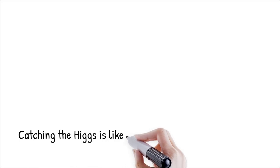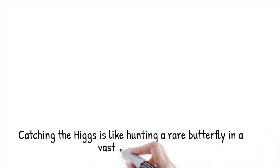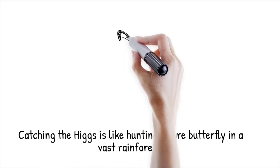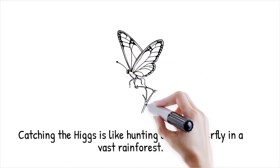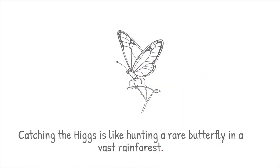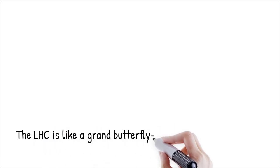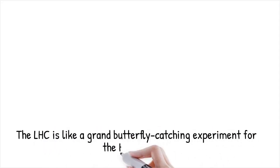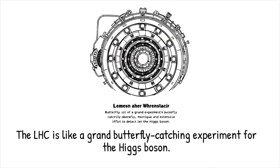The probability of producing a Higgs boson in a single proton-proton collision at the LHC is incredibly small — like playing a slot machine millions of times just to hit a particular combination once. By running the collider for months and years, scientists accumulate enough collisions to see the Higgs' faint signal emerge statistically. Imagine trying to catch a rare butterfly in a huge rainforest: you know it exists because you've found tracks and indirect evidence, but actually catching it requires that grand experiment.